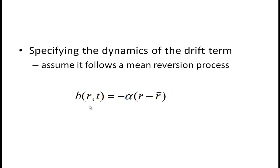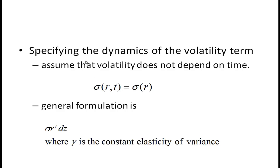We model mean reversion with a negative alpha term applied to the change in the short rate. We also want to specify the dynamics of the volatility term, assuming that volatility does not depend on time — there's no reason it should be more volatile six months from now than today. We do assume volatility depends on the rate, so we drop the time dependence and say volatility is only a function of the rate.